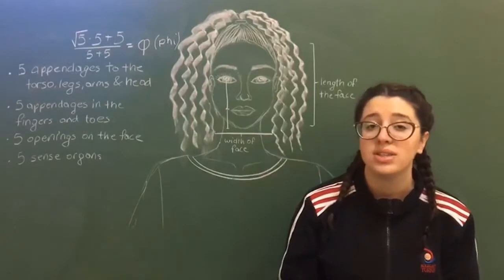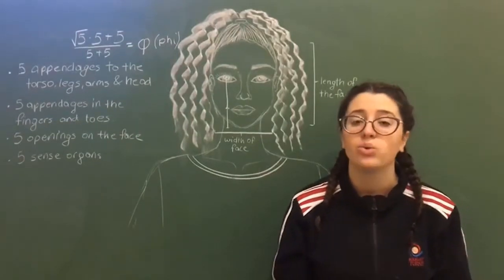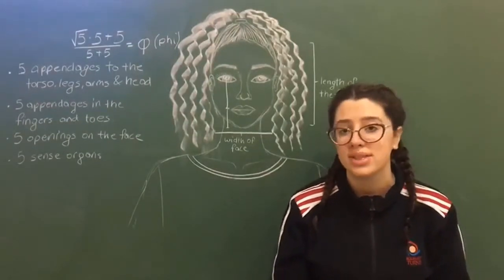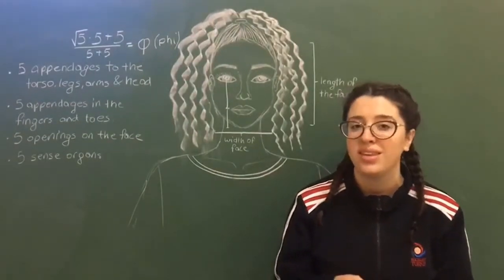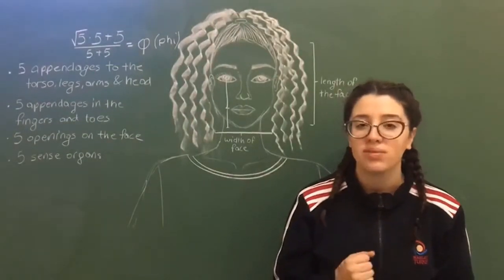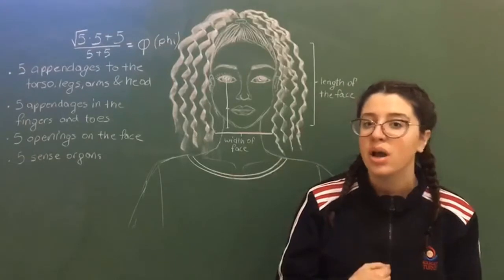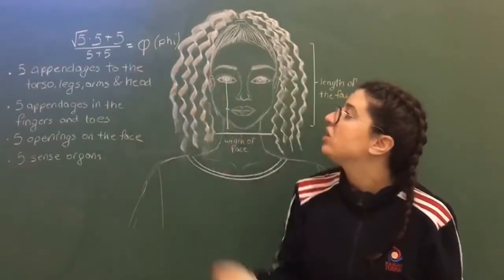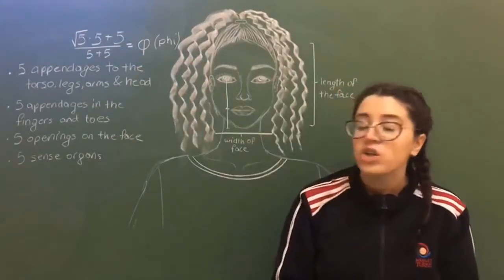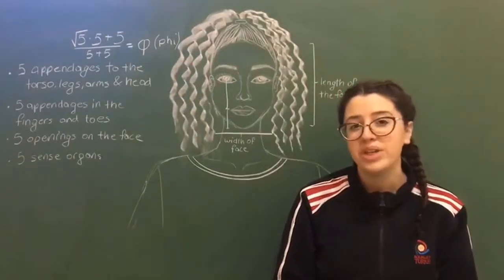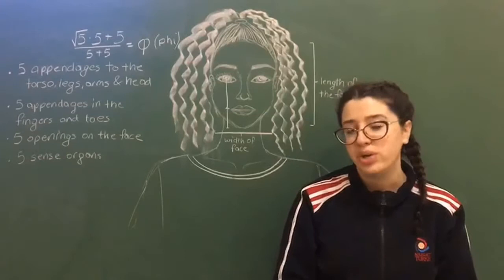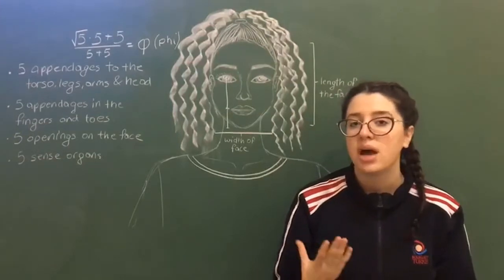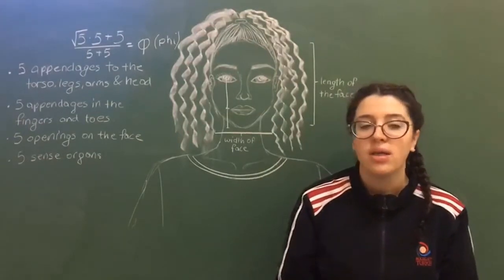The golden ratio is a number equal to 1.618, and you can find this number by calculating the equation shown here. The basis of the golden ratio is the number 5.